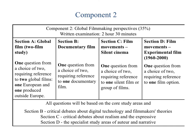Component 2 looks at global filmmaking perspectives. This is another written exam, two and a half hours long. Section A looks at global film and is a two-film study. Section B looks at documentary film. Section C zooms in on film movements — in this case, silent cinema. And Section D looks at film movements, specifically experimental film.